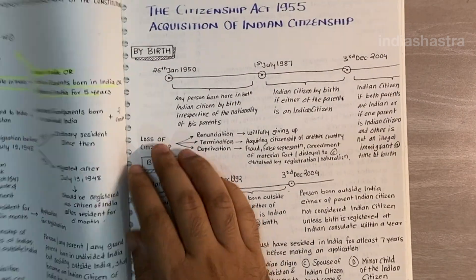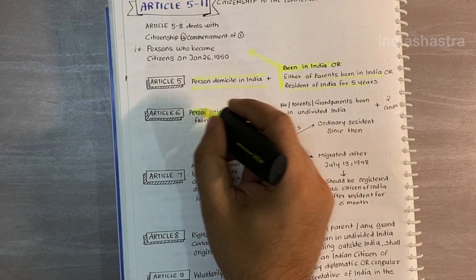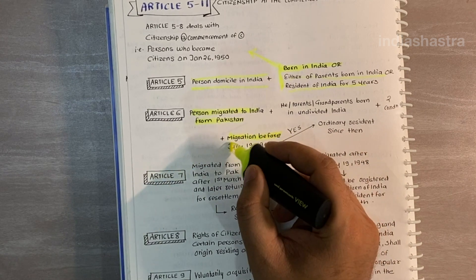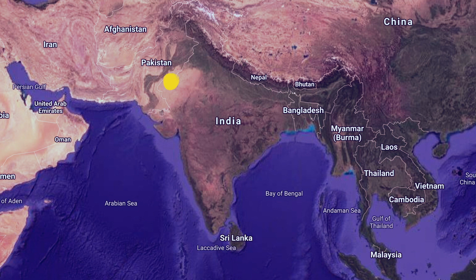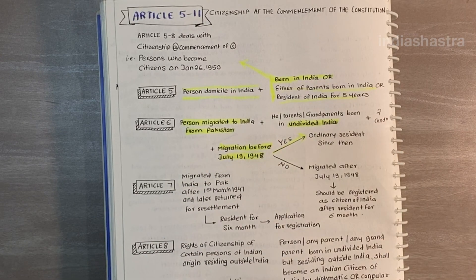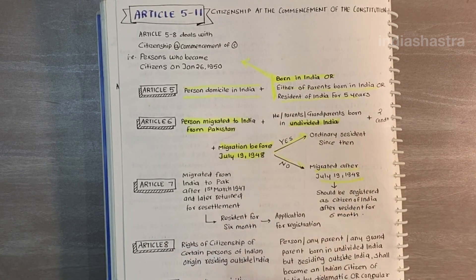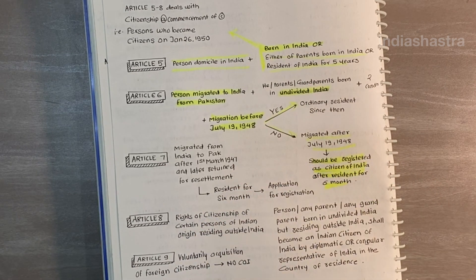Moving to Article 6: a person who migrated to India from Pakistan before 19th July 1948 became a citizen of India on Republic Day. Many Sikh and Muslim brothers who migrated to India became citizens with the help of this provision under Article 6. A person migrating after 19th July 1948 was registered after residing in independent India for 6 months, and then became a citizen of India.